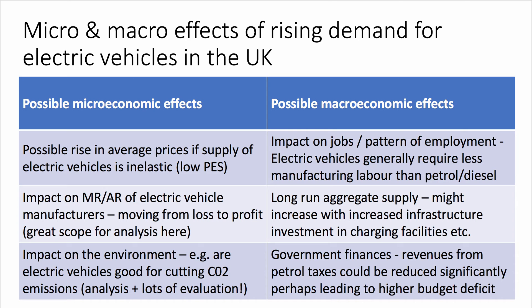A really good macro point would be to think about government finances. It's likely that revenue from petrol taxes will fall, and that could lead to an increased budget deficit — that would be a macro point. However, if you want to evaluate: the government might accept that taxes on petrol will come down, but then move more decisively to new forms of electronic road pricing, perhaps as a way of increasing tax revenues and getting all vehicle users — petrol, diesel, and electric — to pay a contribution for their use of road space.